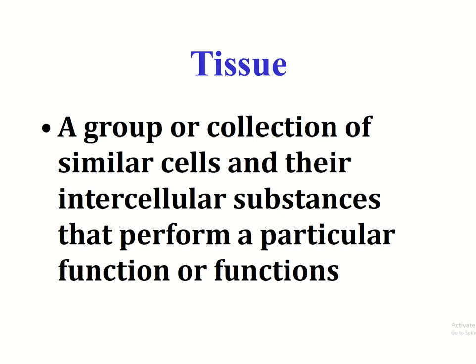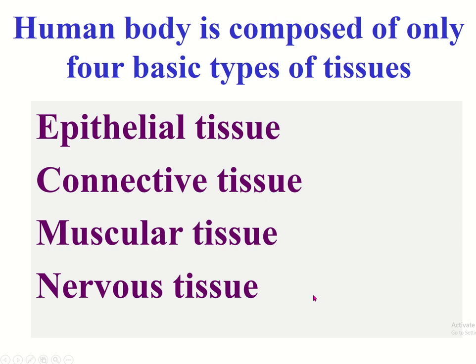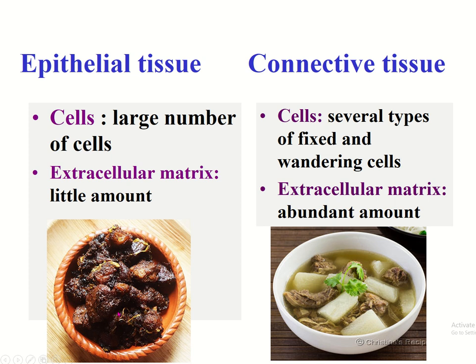First, the definition of tissue: tissue means a group or collection of similar cells and their intercellular substance that perform a particular function. There are four types of basic tissue present in our body: epithelial tissue, connective tissue, muscular tissue, and nervous tissue.